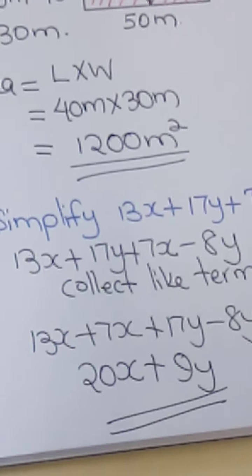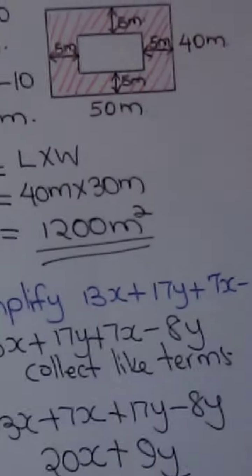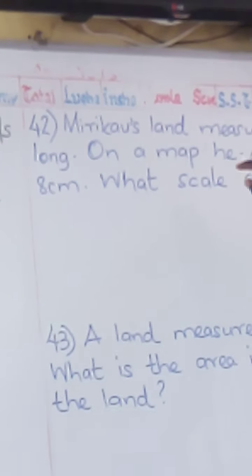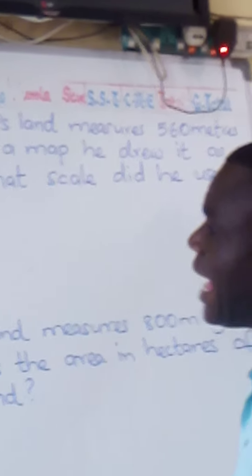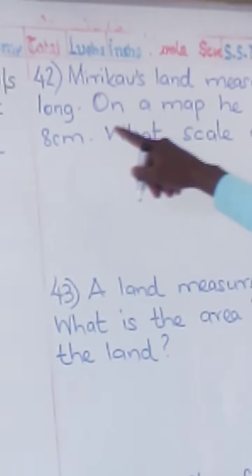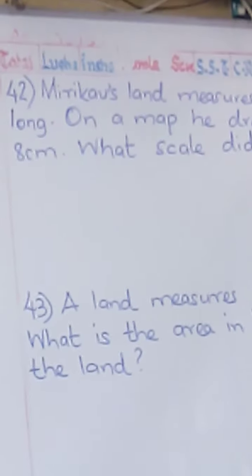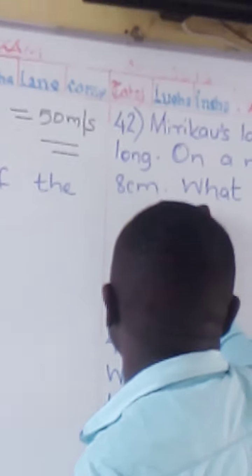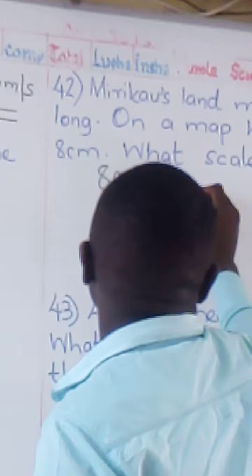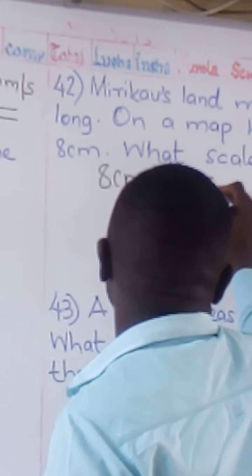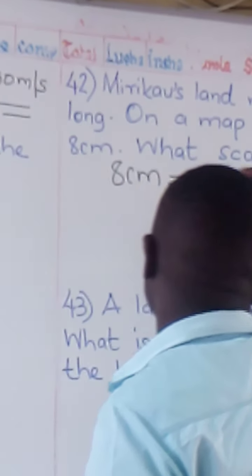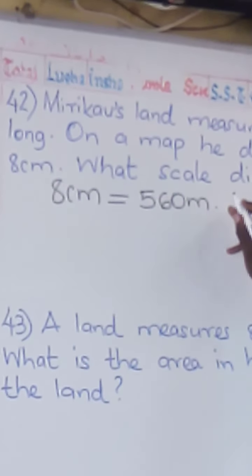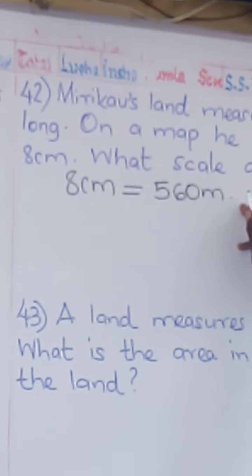We go to question 42. Moryuki's land measures 560 meters long. On the map he drew, it has 8 centimeters. That means on the map, 8 centimeters represents 560 meters. We make sure they are in the same unit — this is in meters and that is in centimeters — so we convert 560 meters to centimeters by multiplying by 100, giving 56,000 centimeters.